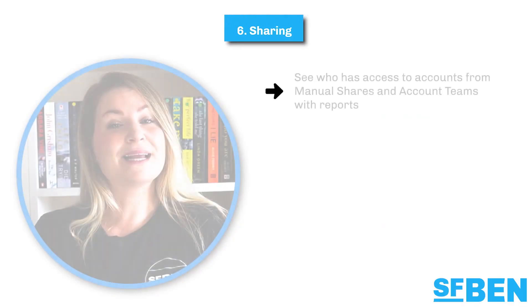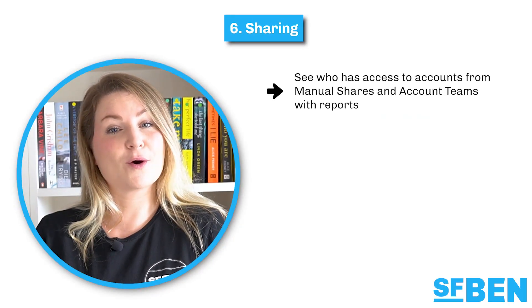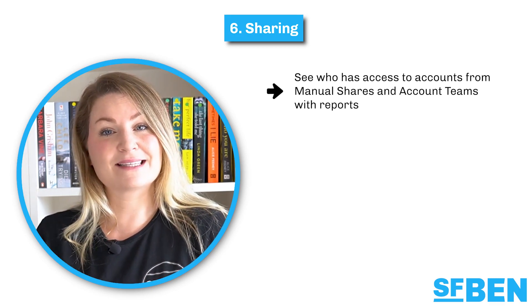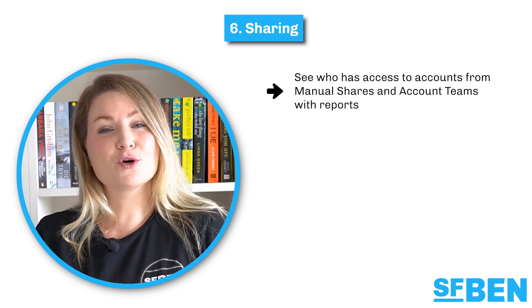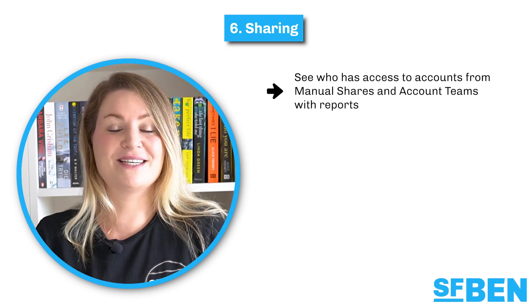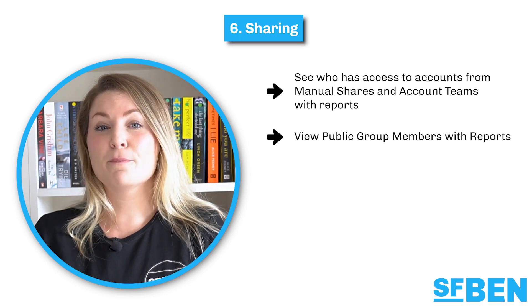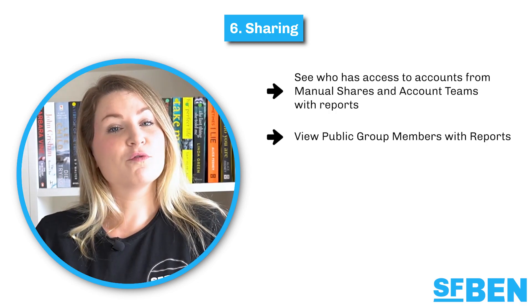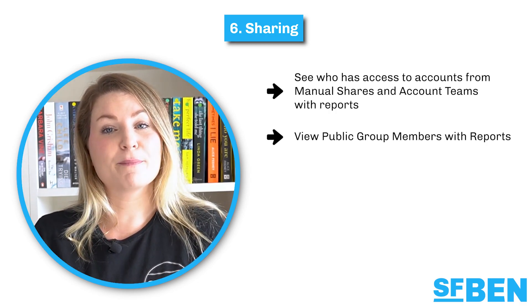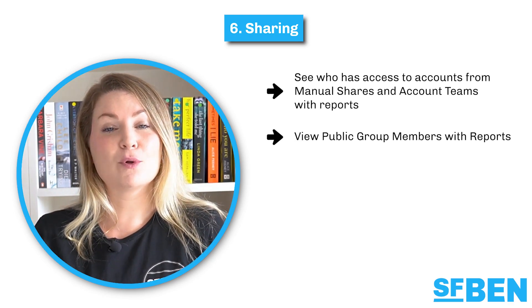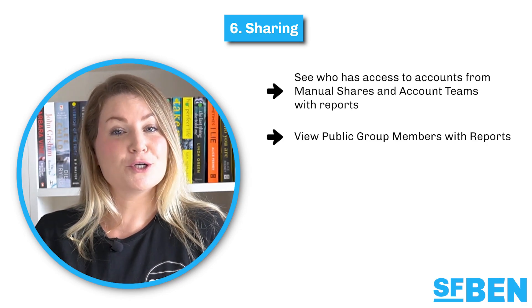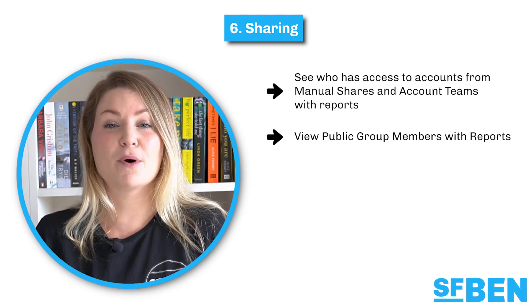Similarly to permissions, there are quite a number of sharing features worth a mention. You can now create a custom report type on the account share object to enable reporting on account access via manual shares and the account team. This update is sure to make managing the security of your accounts much easier. Use the group member report to manage public group membership more easily — you'll first need to create a custom report type selecting group member as the primary object. Once deployed, you and your users can use it to see which users, roles and other groups have been added to public groups.